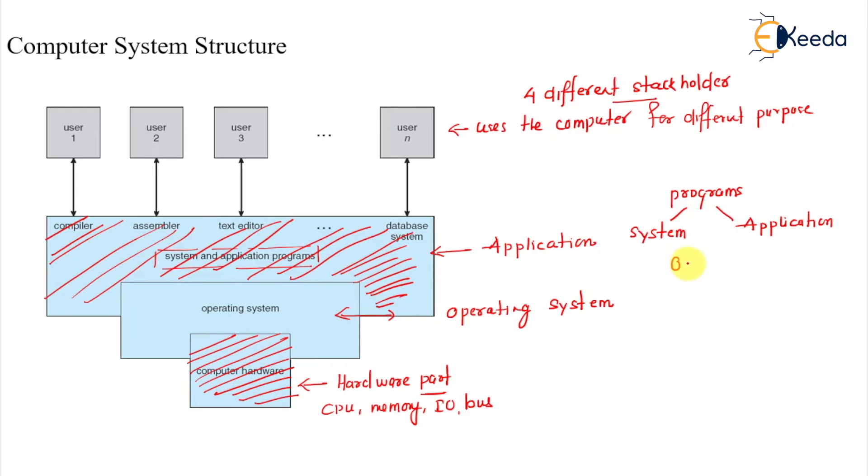Then we have our operating system. So operating system is going to interact with system programs and then finally operating system is going to interact with computer hardware. That can give you a very small definition of this computer system architecture.